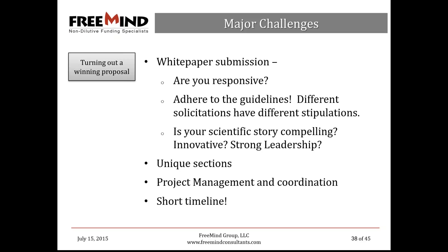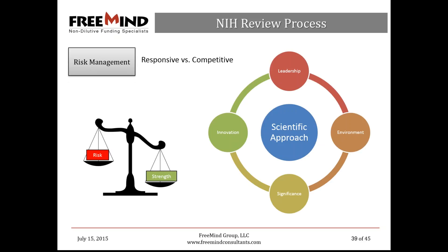You need to read that solicitation again and again — make sure you follow all the guidelines, because the worst thing is having great science and failing to win the award because you didn't follow them. That's like hitting a home run and being called out because you forgot to touch one of the bases. Read the solicitation carefully, as each has its own unique sections, manage the project, coordinate collaborators in different locations, and be prepared for a short timeline — sometimes only 45 to 90 days from pre-application to full application.